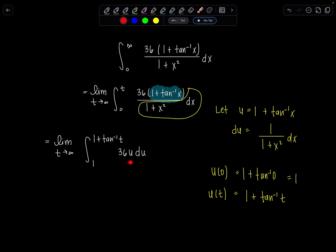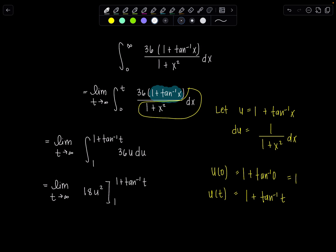Now, this is just the most relaxing integral I have seen in a while. Antiderivative of 36u is 18u squared. Good. And we evaluate that from 1 to 1 plus tan inverse of t. So far so good.